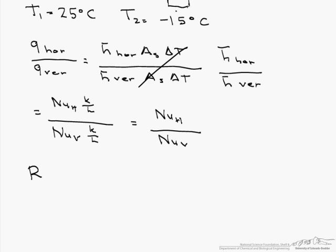So our Rayleigh number is g times beta times delta T times L cubed divided by the kinematic viscosity times alpha, or our thermal diffusivity.